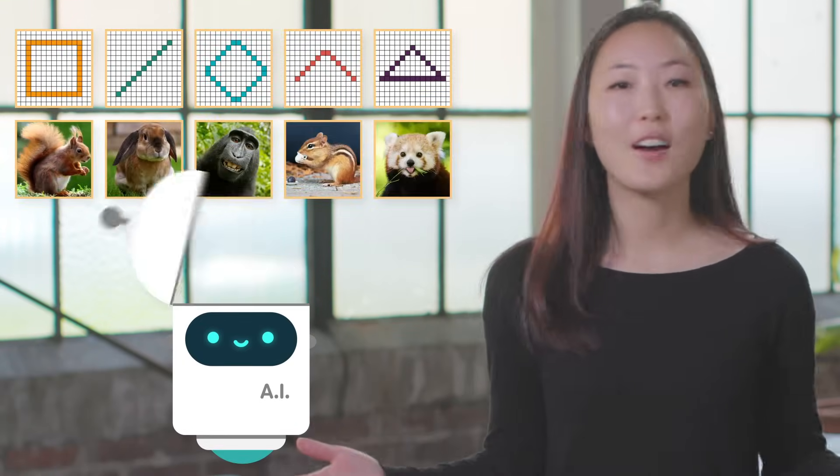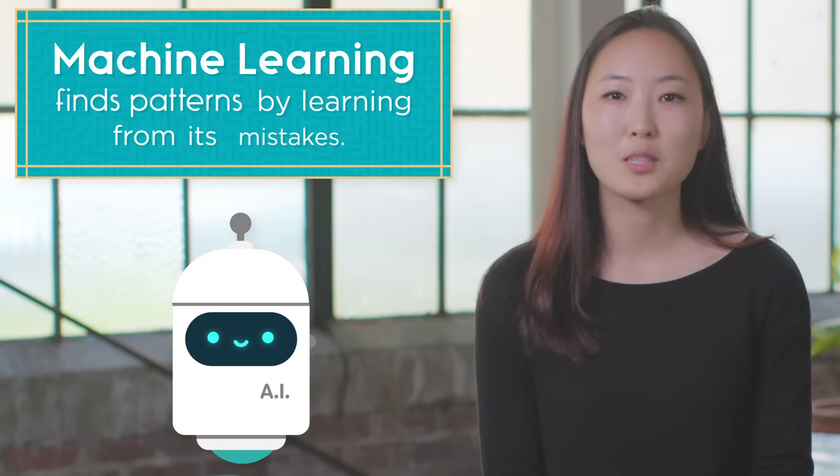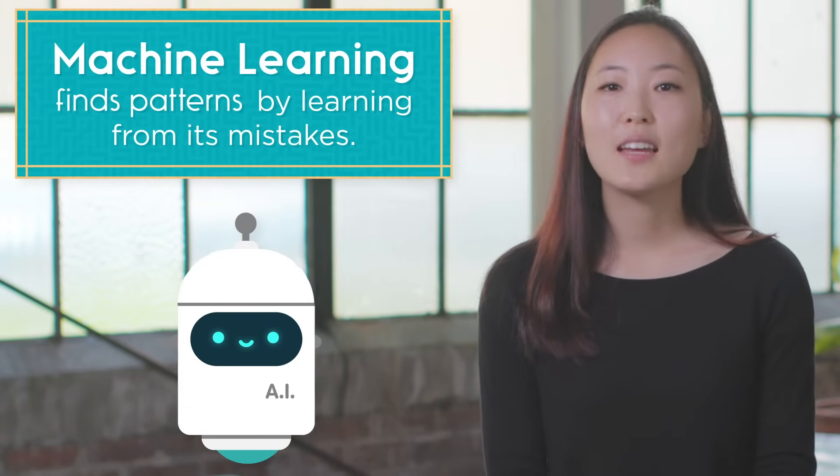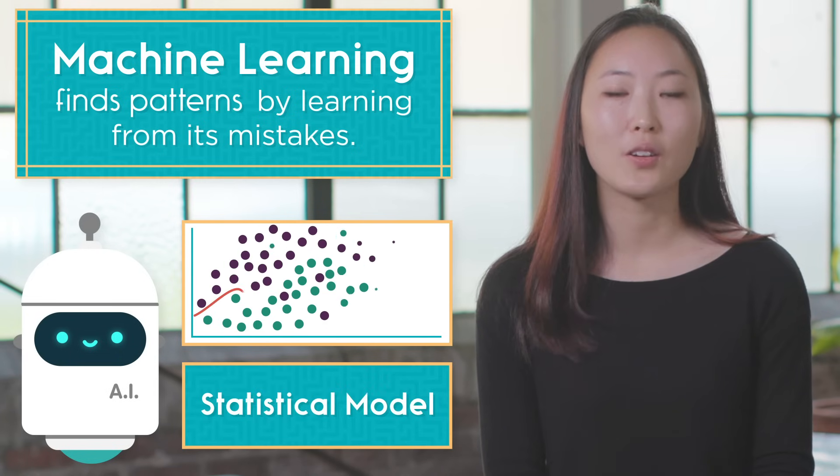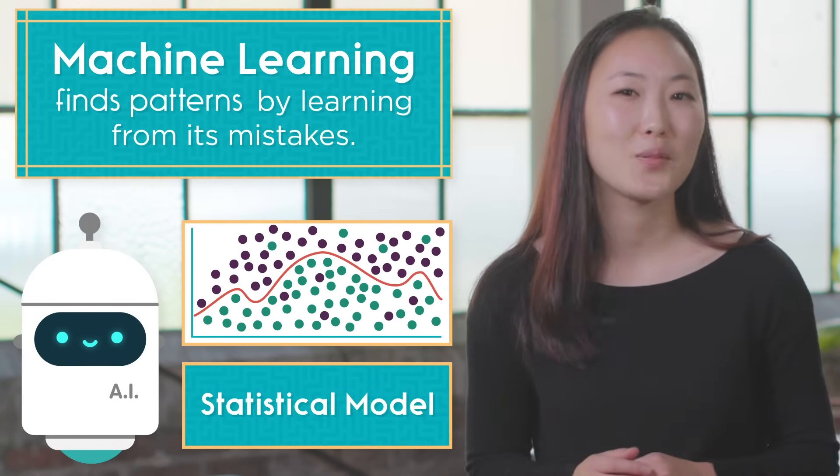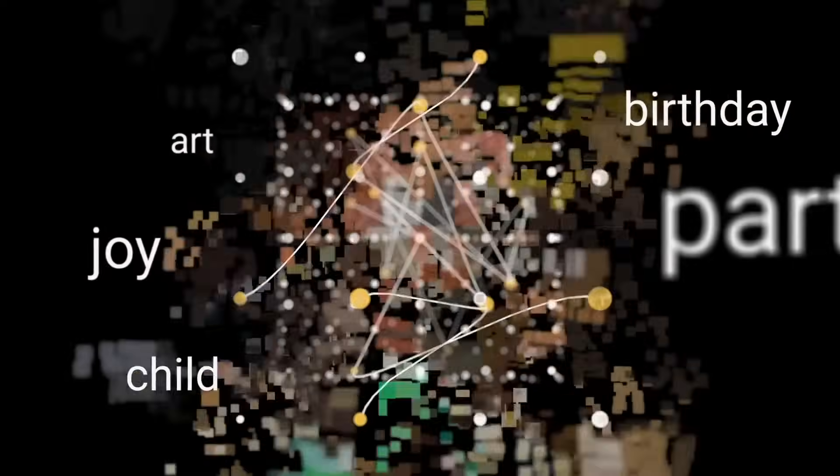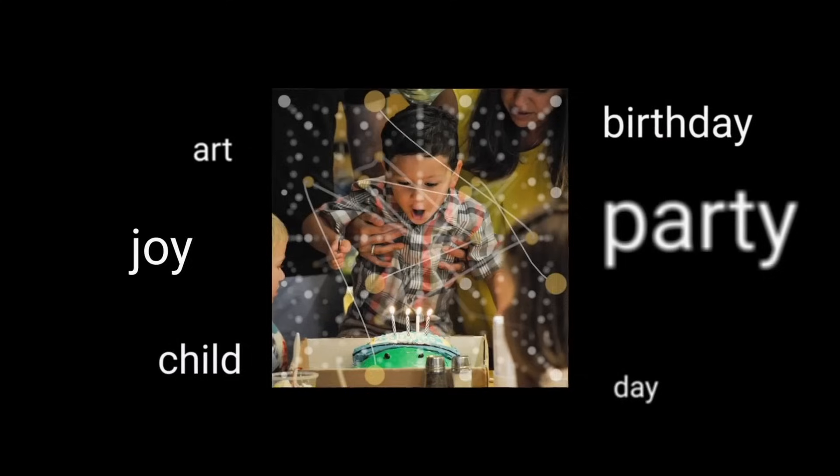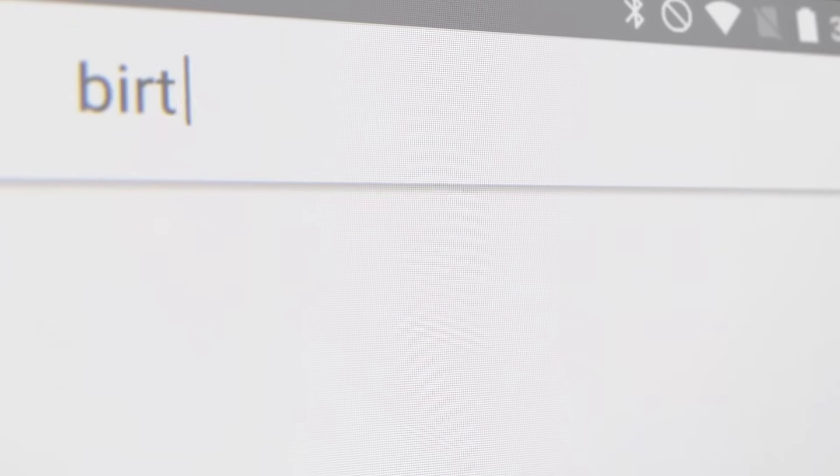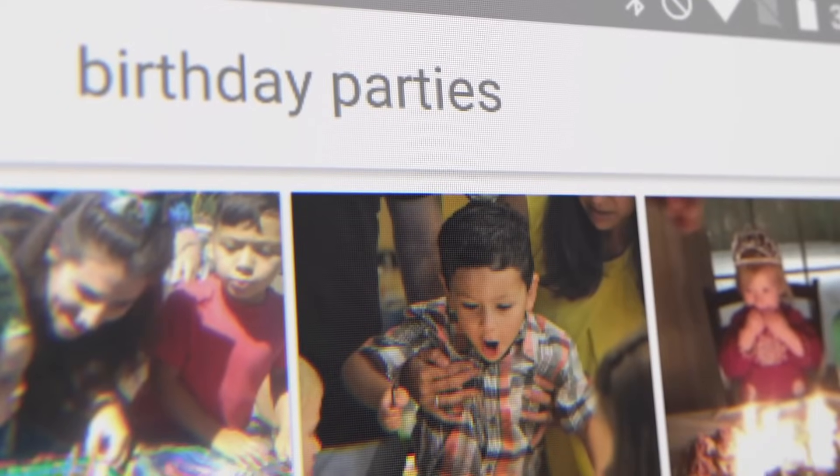Whether it's trying to guess shapes, animals, or any other category, machine learning finds patterns by learning from its mistakes. The training data is used to make a statistical model, which is just a fancy way of saying a guessing machine. When we give it training data, the guessing machine is tuned and optimized to recognize the pictures we gave it, with the hope that it will then be able to recognize new pictures with the same accuracy.